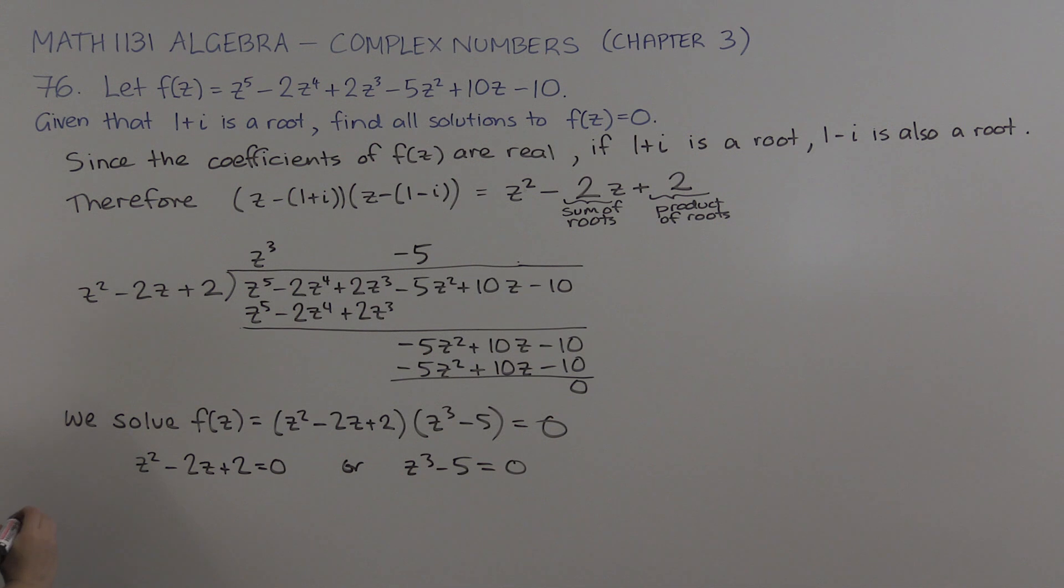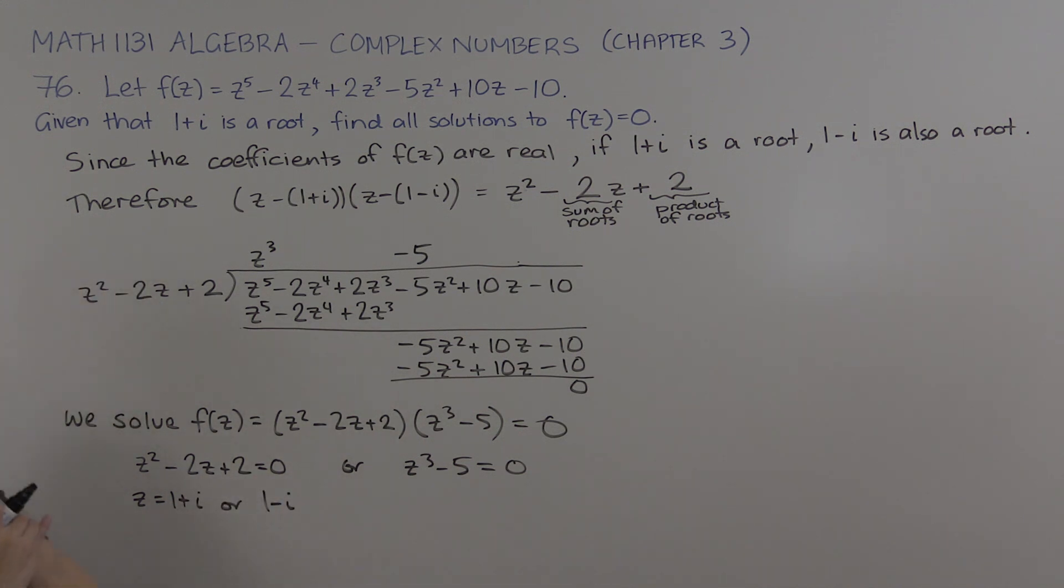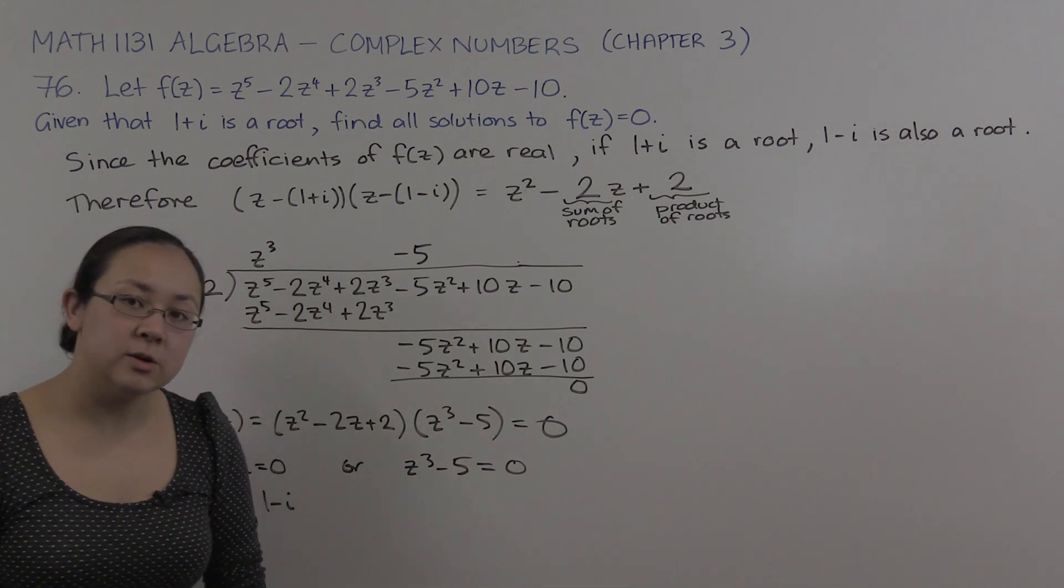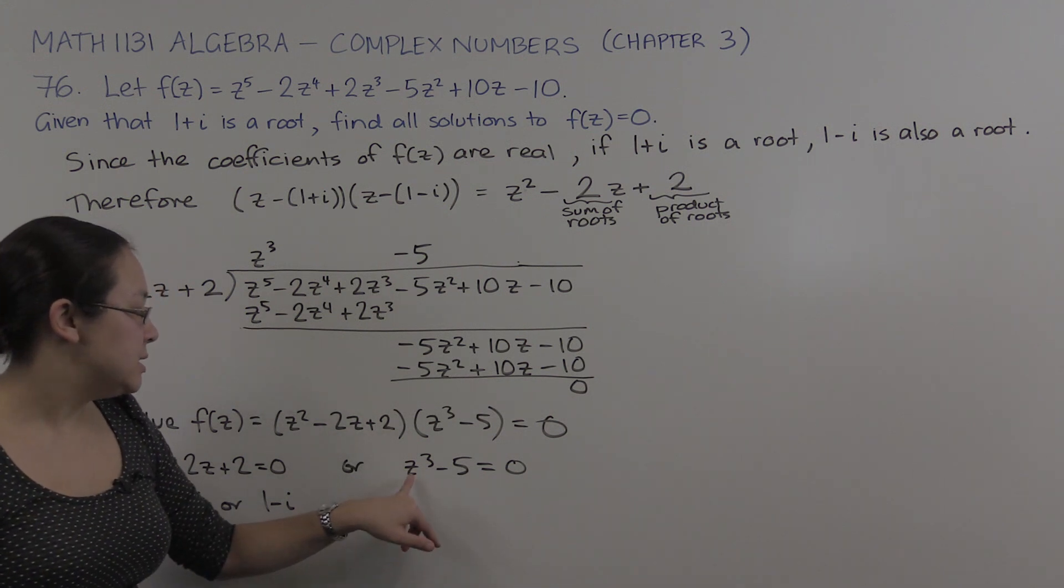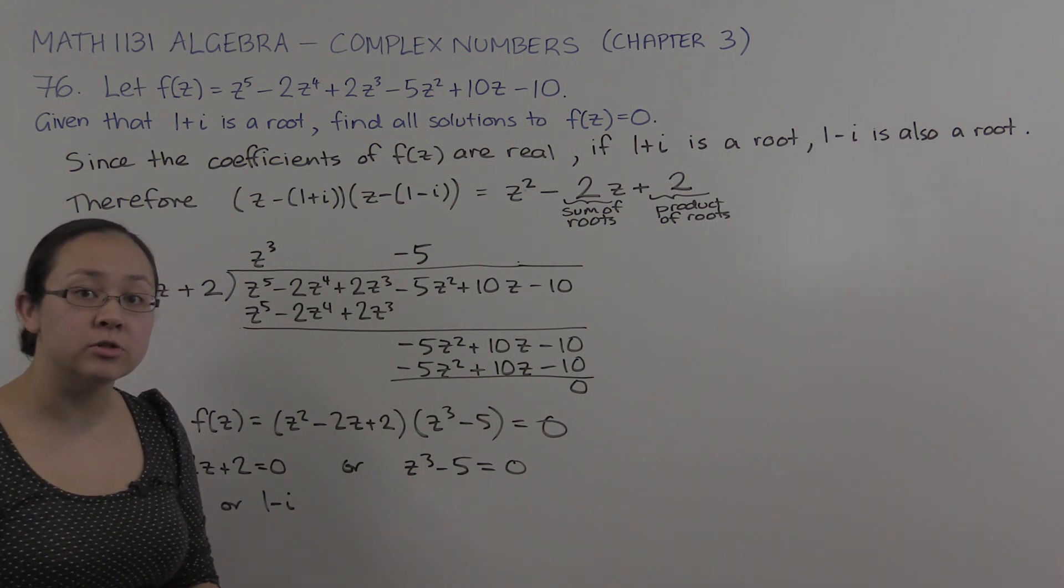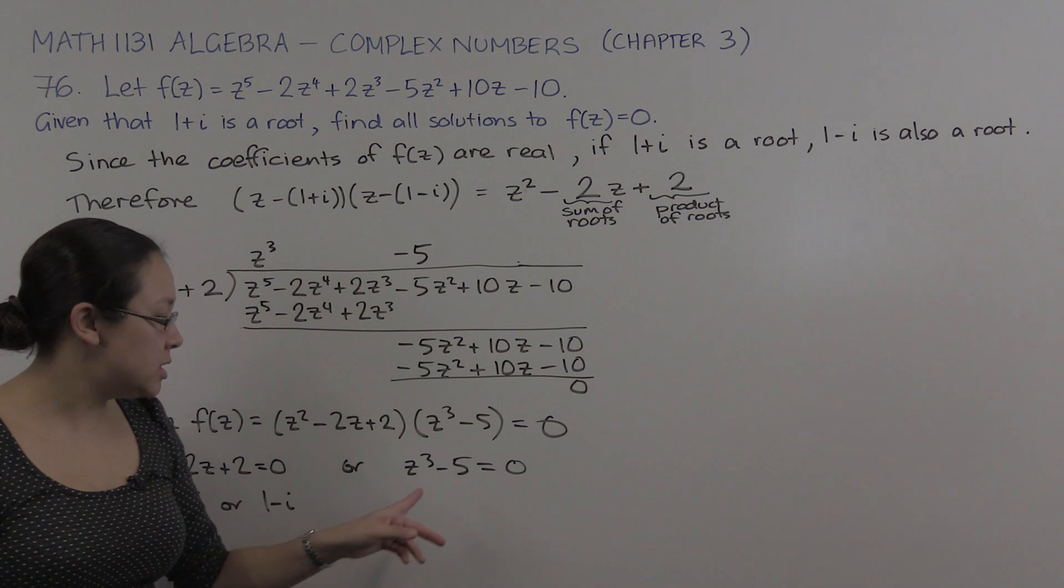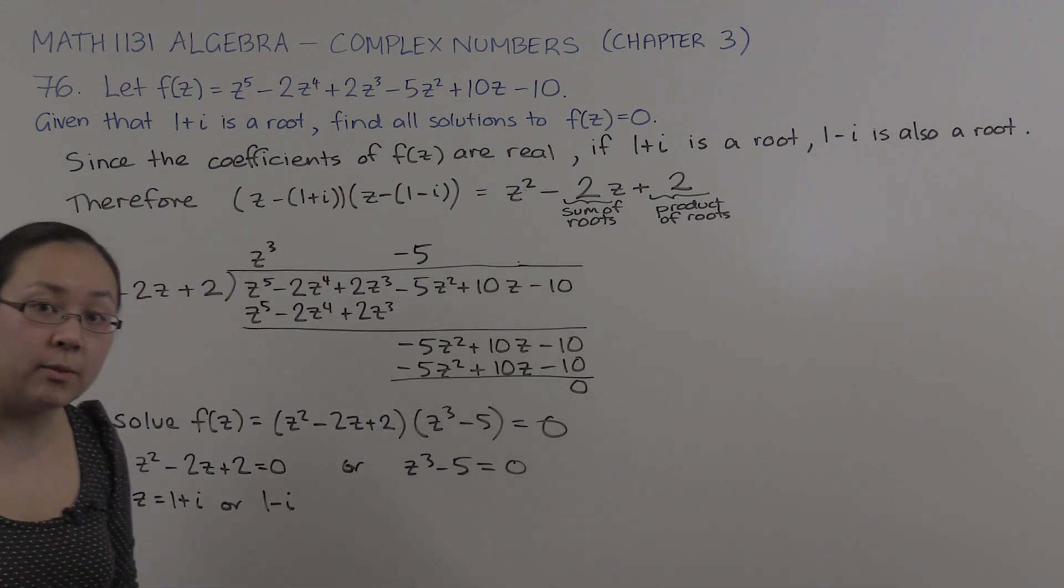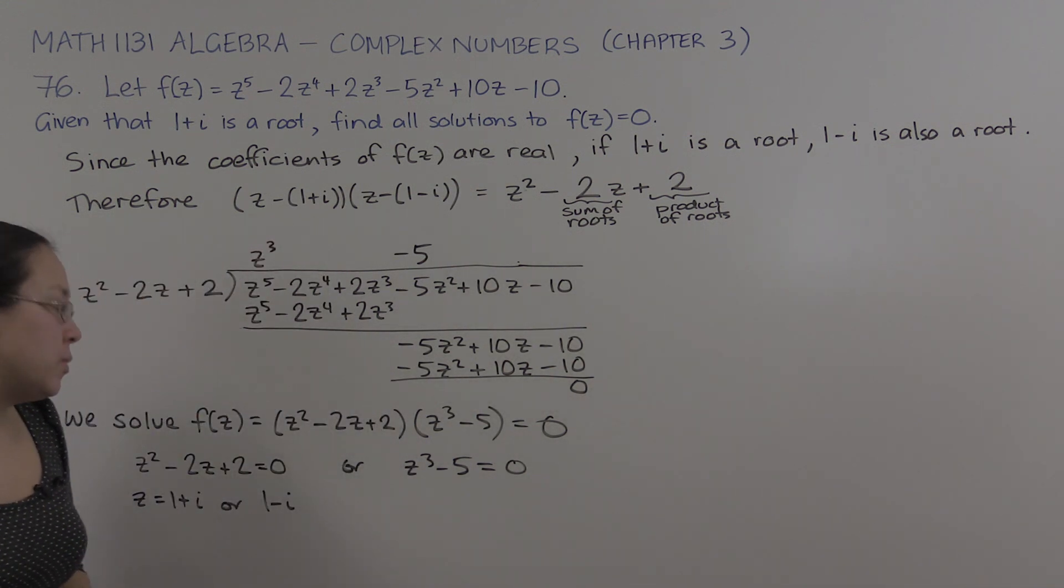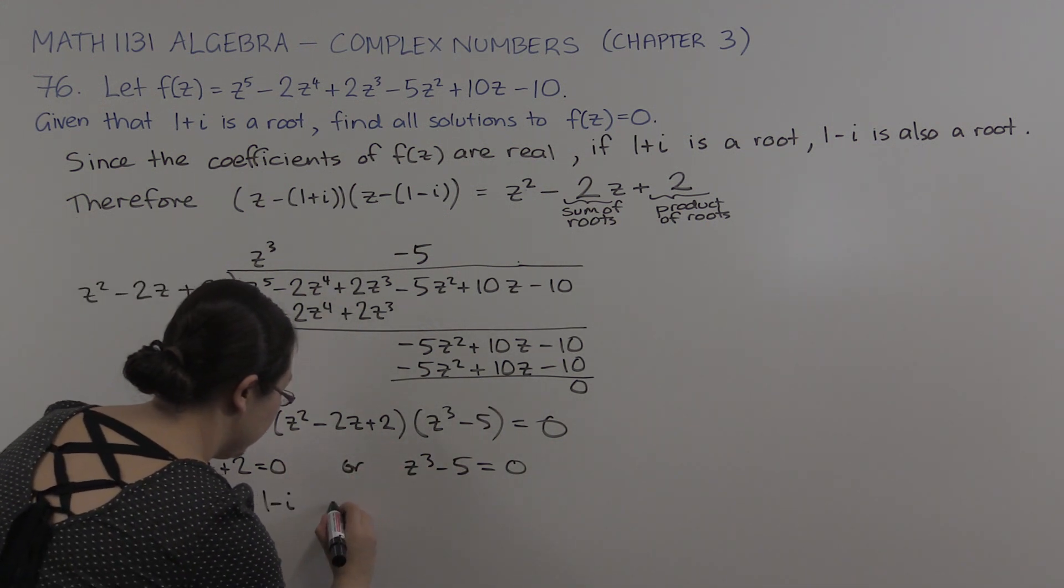Well, we already know the answers to z squared minus 2z plus 2 equals 0 because they were our original 1 plus i and 1 minus i that we had. Now, z cubed minus 5 equals 0. There's essentially two ways to solve this. We could do it in modulus argument form. This says z cubed equals 5. So what we're trying to do is find the cube roots of 5. But we can do it in Cartesian form just because this is a cubic like a cubed minus b cubed. I know how to factorize that. So you could do it that way as well. I'm going to do it that second way, but both ways will be fine.